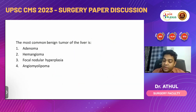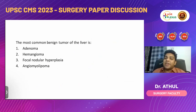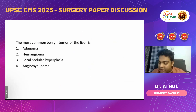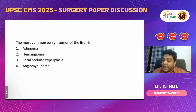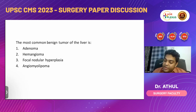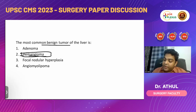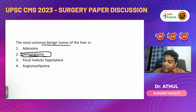Third question: the most common benign tumor of the liver is — options are adenoma, hemangioma, focal nodular hyperplasia, and angiomyolipoma. The answer is option B, hemangioma. All these listed options form benign tumors in the liver, but the most common benign liver tumor is hemangioma. This is a point directly from the topics discussed in class and even mentioned in one of our strike materials.